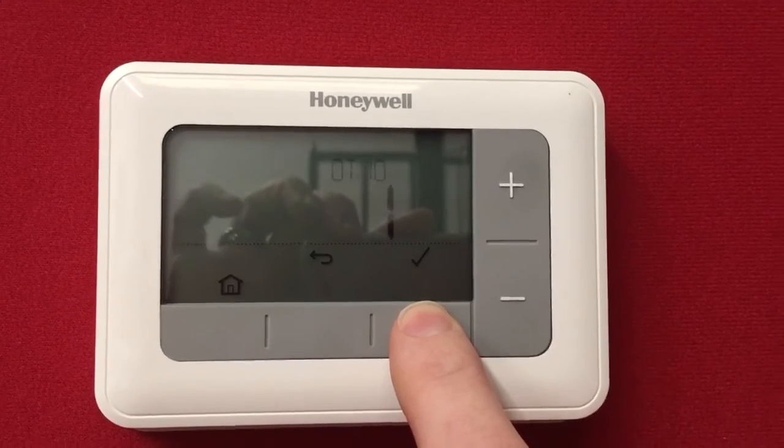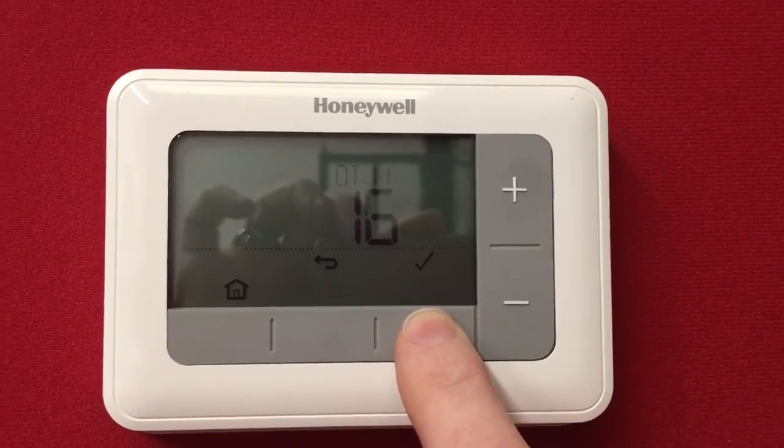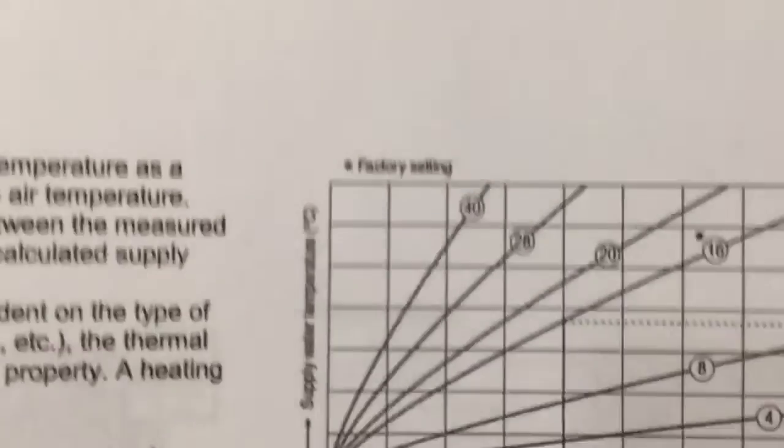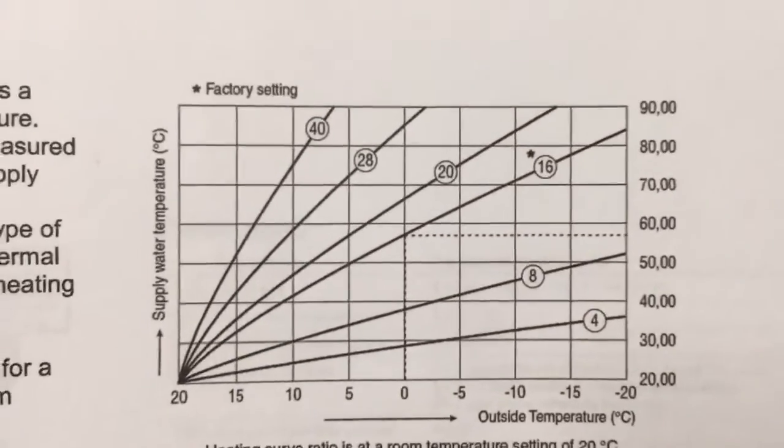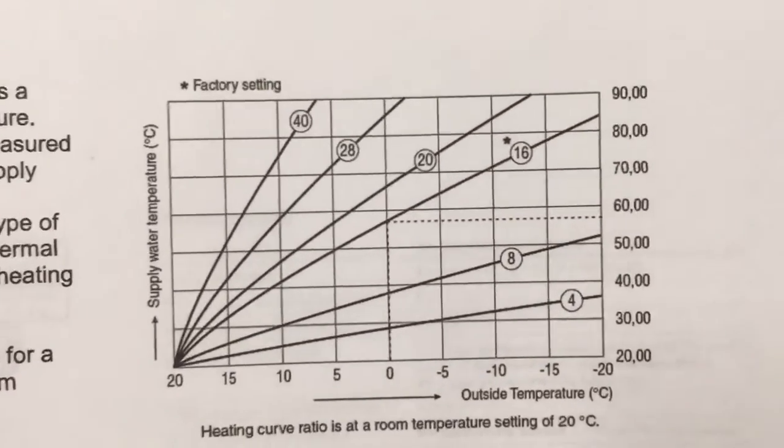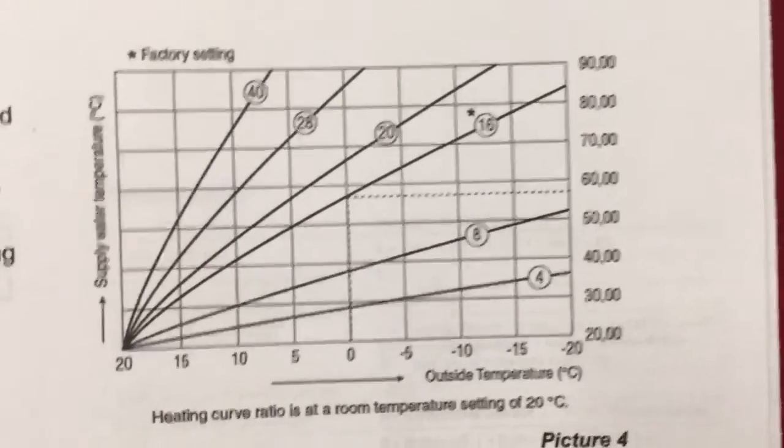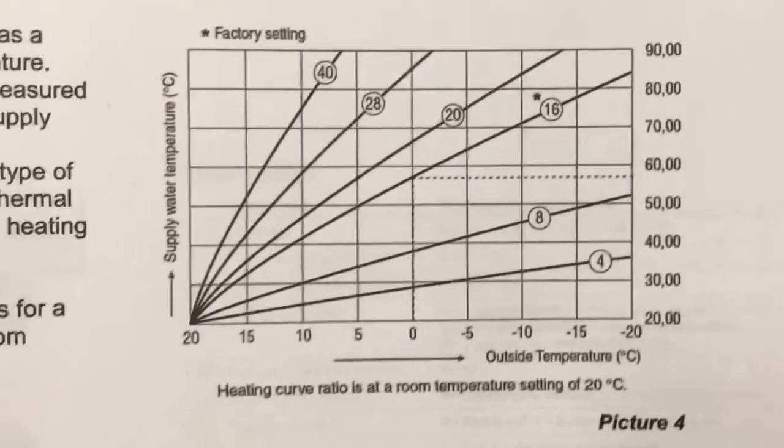Then I've got the curve, which, according to the graph, let's quickly show you what I'm working off here. So we're working off the graph that gives you a rough idea of what the graph is. So we're currently at the standard default setting of 16 there, as you can see.